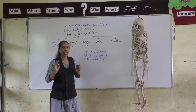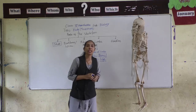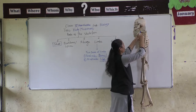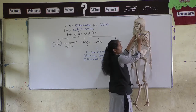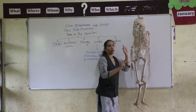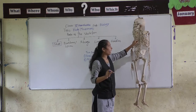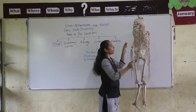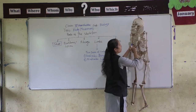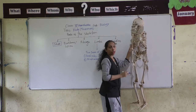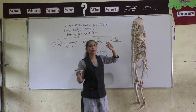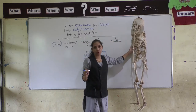The forelimbs or arms connect to the backbone with the help of the shoulder girdle. One more part also helps to connect the arms to the backbone — that is the collar bone. So with the help of the collar bone and the shoulder girdle, the arms are connected to the backbone.